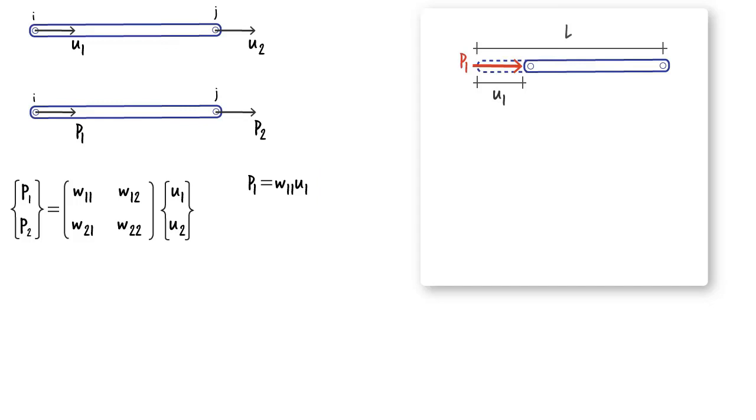We can also relate the axial force to the axial displacement using this equation, where sigma is axial stress, E is the modulus of elasticity of the material and epsilon is axial strain. Knowing that axial stress is force over cross-sectional area and axial strain is displacement over length, we can conclude that W11 equals EA divided by L.